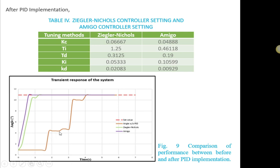This is the red line here is the system without the PID implementation. The green line is by using the Ziegler-Nichols and the purple line is using the Amigo technique.